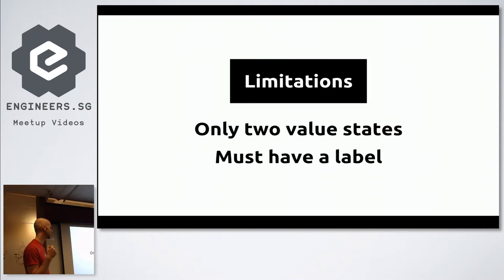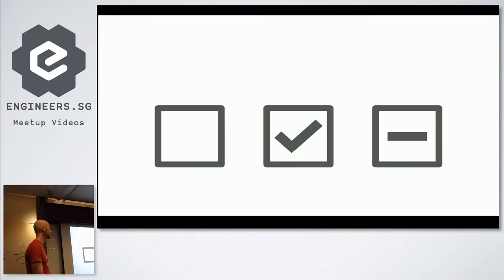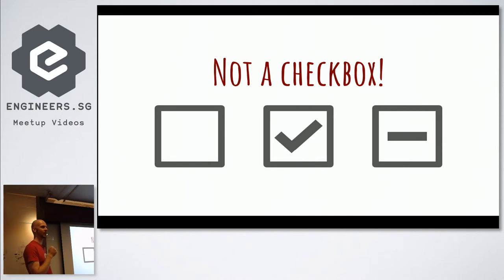I also thought about the limitations. With this approach, you must have a label — so if you're trying to do something like the Gmail interface where there's a rogue checkbox on the side, it might be hard. You can also only have two value states, either checked or unchecked, and this is a limitation of HTML itself. If you want to do the Gmail thing where there's not checked, checked, and sort of checked — that third indeterminate state, which happens when you select all and then unselect one item — that's actually not a checkbox, it's something else. Maybe it's like a check-slash-indeterminate box.